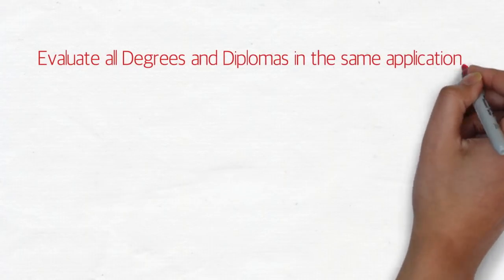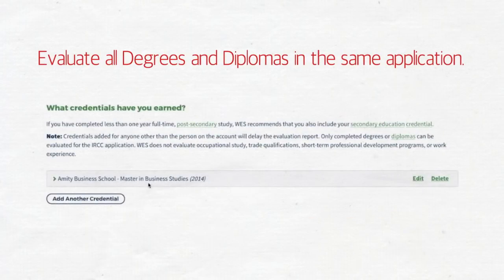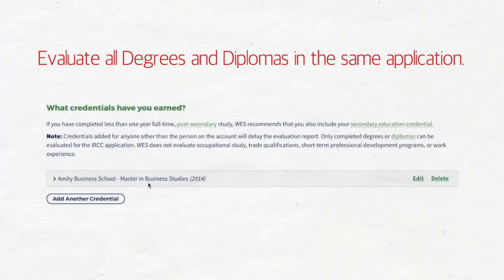The last tip: evaluate all your degrees and diplomas in the same application. This is for the primary applicant — don't get confused, because for a spouse you have to create a separate application with a separate payment and a different WES reference number. But individually, include all your credentials in one application, because there is no provision to add more later — you'd have to create a new application and pay all the fees again.